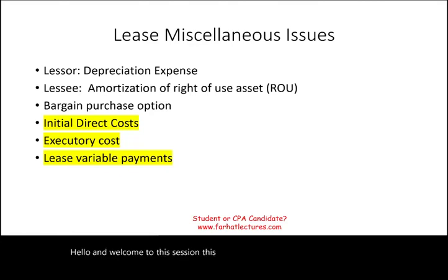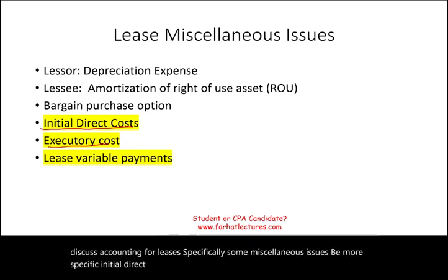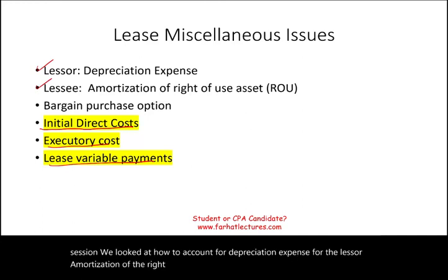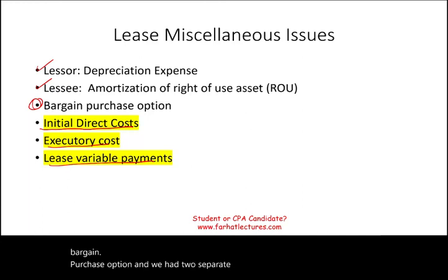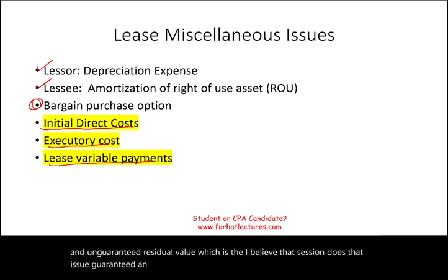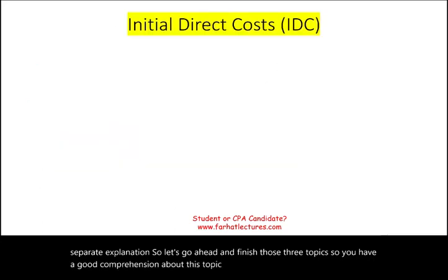Hello and welcome to this session. This is Professor Farhad, and we will discuss accounting for leases — specifically some miscellaneous issues: initial direct cost, executory cost, and lease variable payments. In the prior session, we looked at depreciation expense for the lessor, amortization of the right-of-use asset for the lessee, how to deal with bargain purchase option, and guaranteed and unguaranteed residual value. Let's finish those three topics so you have a good comprehension, whether you are a student or a CPA candidate.